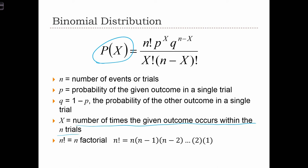n is just the number of events or trials. So in 10 coin tosses, n would be 10. p is the probability of the given outcome in a single trial. So if the outcome is flipping a head, and we only had one trial,